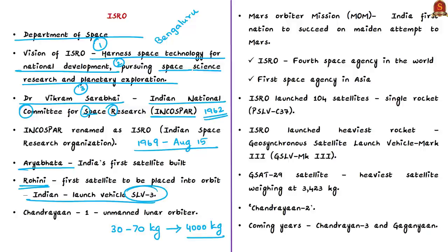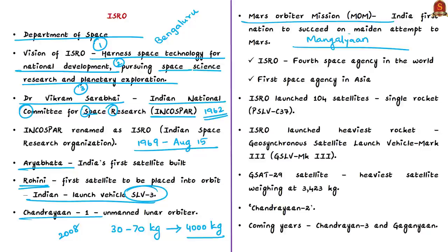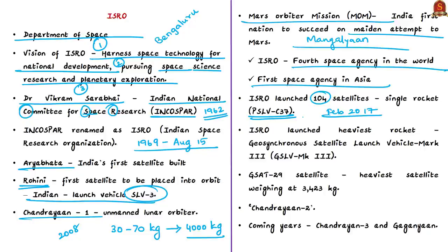Rohini was the first satellite placed into orbit by an Indian-made launch vehicle, Satellite Launch Vehicle 3 (SLV-3). Chandrayaan-1, launched in 2008, was an unmanned lunar orbiter mission and was successful. The Mars Orbiter Mission (Mangalyaan/MOM), launched in 2013, made India the first nation to succeed on its maiden attempt to Mars, and ISRO became the fourth space agency — and first in Asia — to reach Mars orbit. In February 2017, ISRO launched 104 satellites in a single rocket (PSLV-C37), setting a world record.